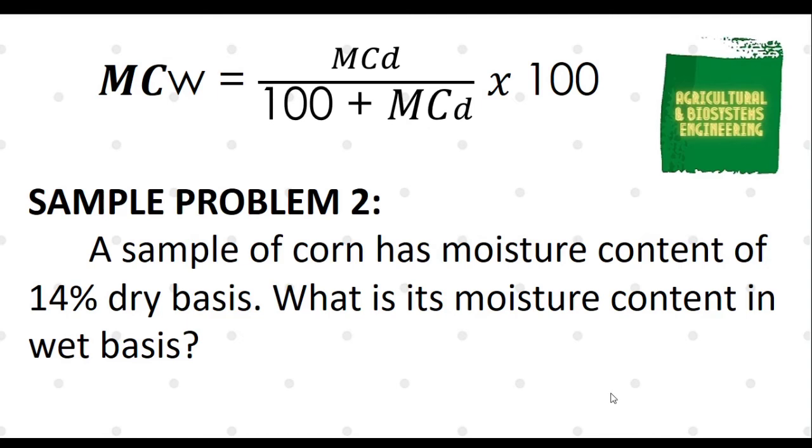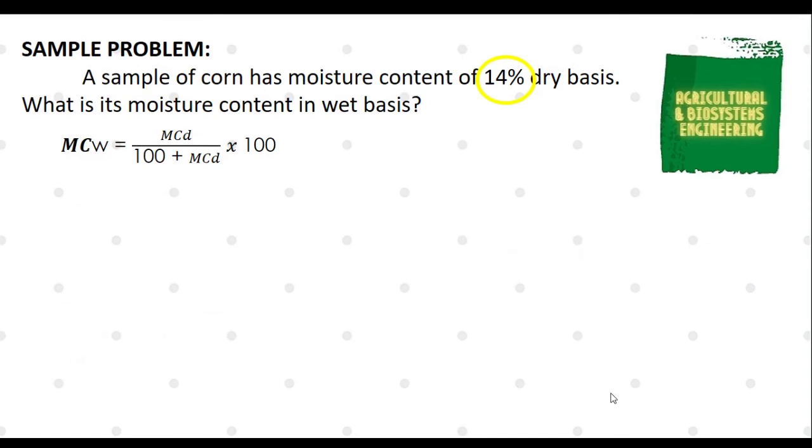Again, the value for Moisture Content Dry Basis is the only given, which is 14%. Now, we simply substitute it to the formula. Having now 14 all over 100 plus 14, multiplied by 100.